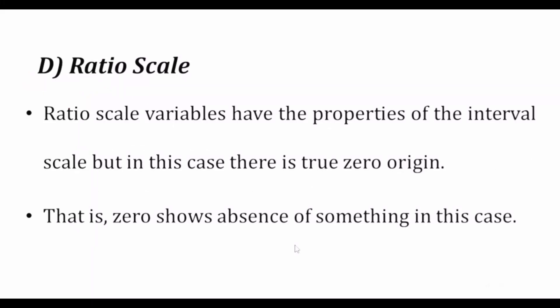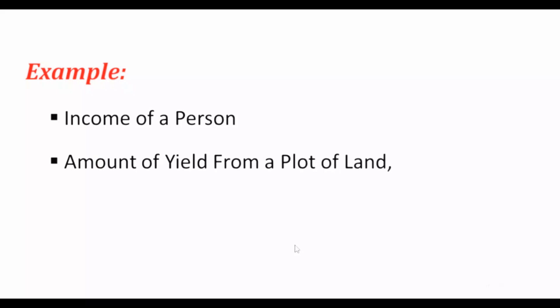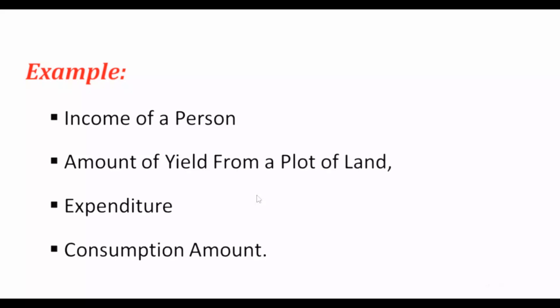In the ratio scale, zero represents the absence of something — a true zero exists. For example, if income is zero, it means there is truly no income. Temperature is an interval variable, while income or expenditure or profit are ratio scale variables under quantitative measurement.